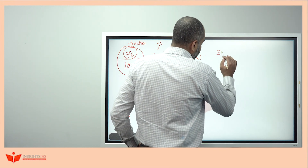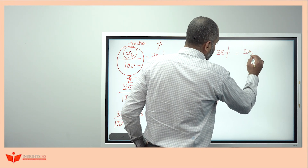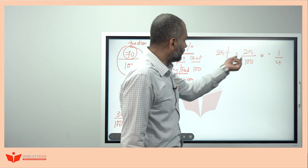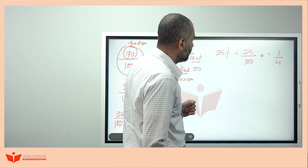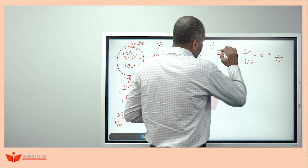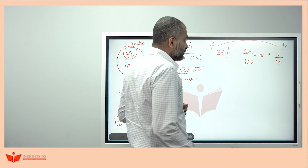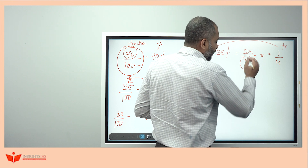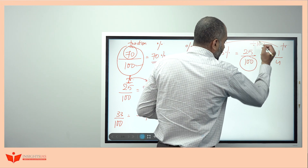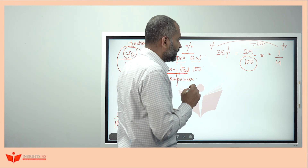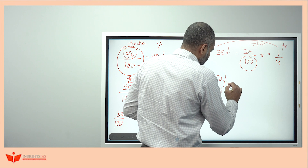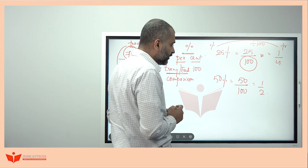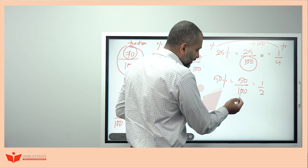Conversely, 25% can be written as 25 by 100, which simplifies to 1 by 4. Here I have converted percentage to fraction format by dividing by 100. Similarly, 50% divided by 100 becomes the fraction 1 by 2. So percentage is converted into fraction by dividing by 100.